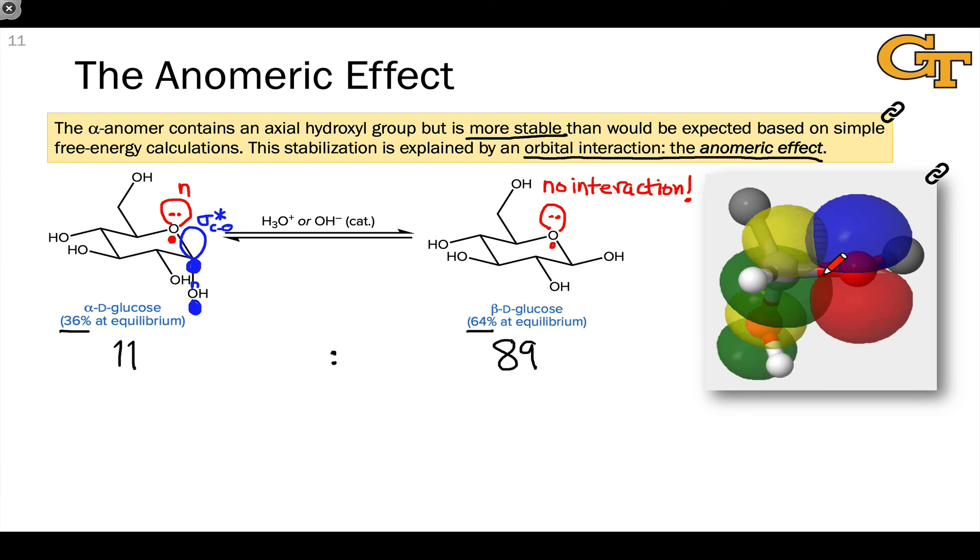This image, derived from NBO calculations on a model system meant to resemble the hemiacetal in glucopyranose, shows this interaction in more detail. Here's the non-bonding orbital, actually a 2p orbital in reality, although I drew it as a hybrid. Close enough for the organic chemist.